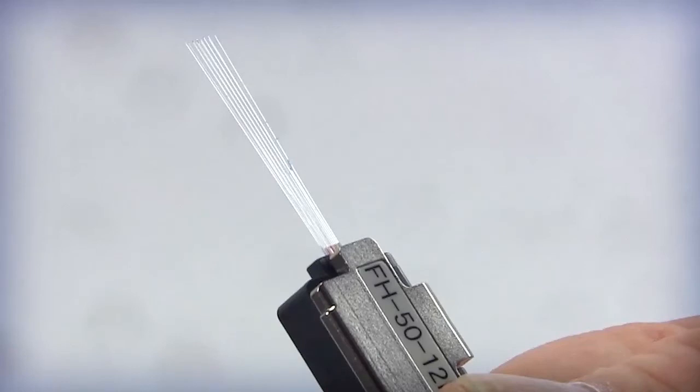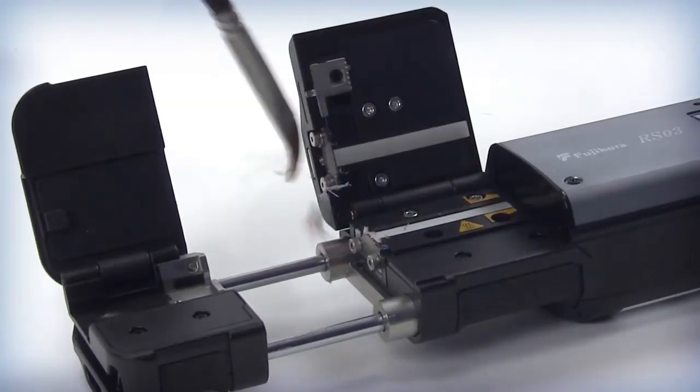Inspect the holder to confirm that all 12 fibers are present and not damaged. Set the fiber holder with the stripped fiber in a safe location. Clean all debris from the thermal stripper.